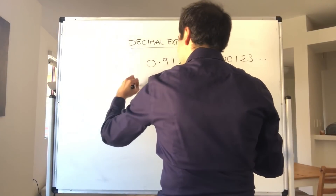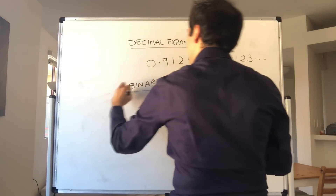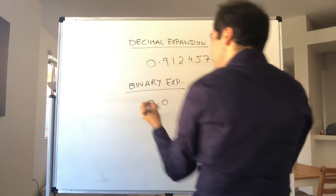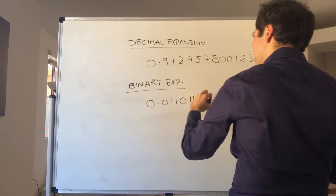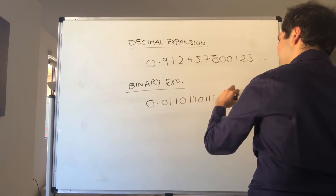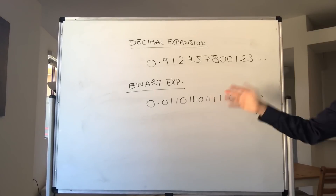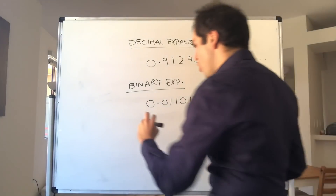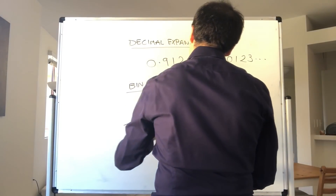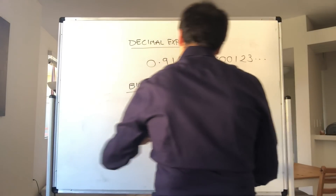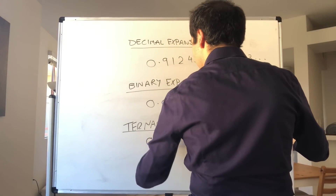A binary expansion is the same thing but where the digits are just zero and one: 0.011101111000... just like the computer that uses bit strings. And then a ternary expansion is the same thing except you're using the digits zero, one, and two: 0.122211110001...